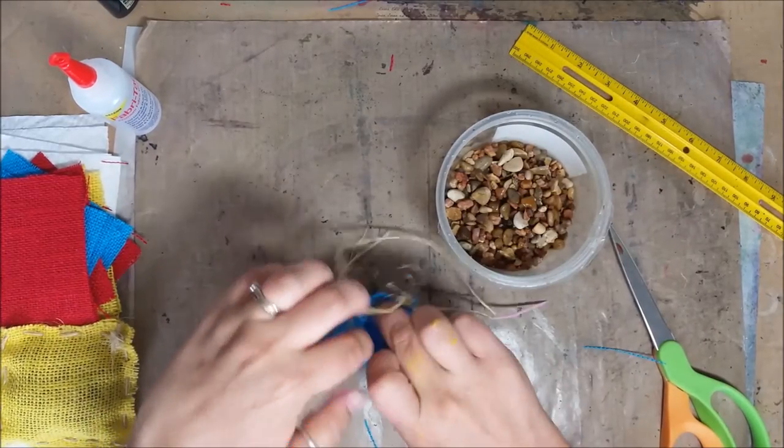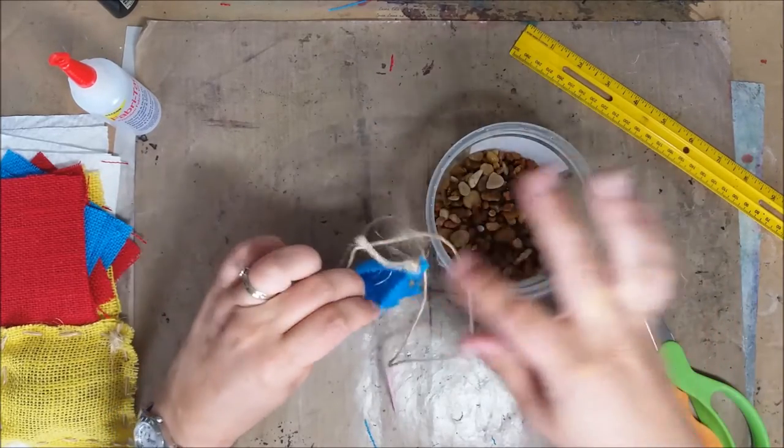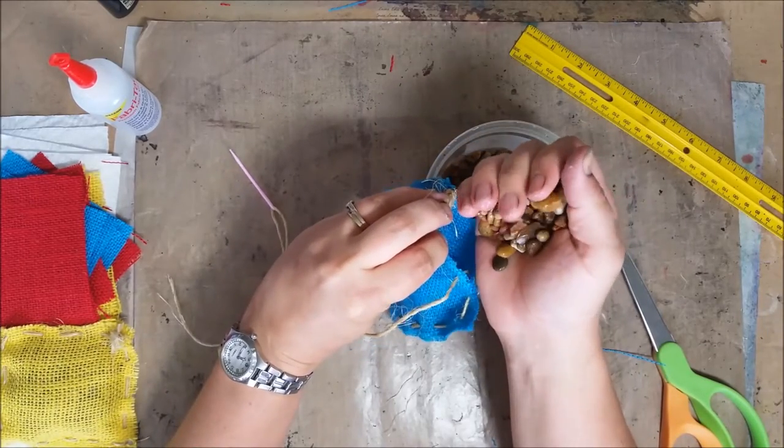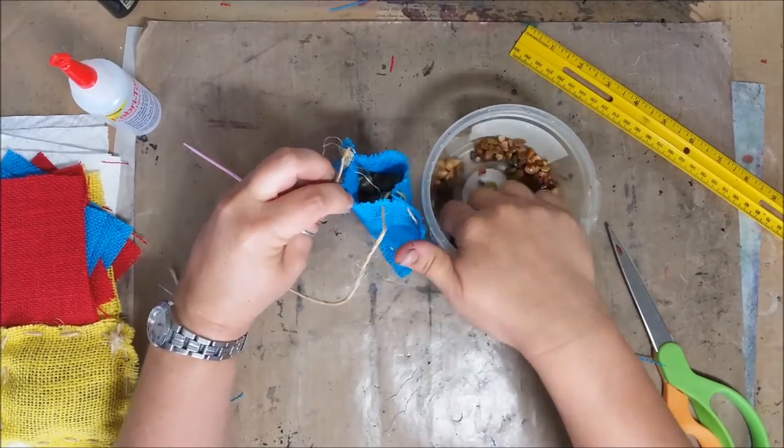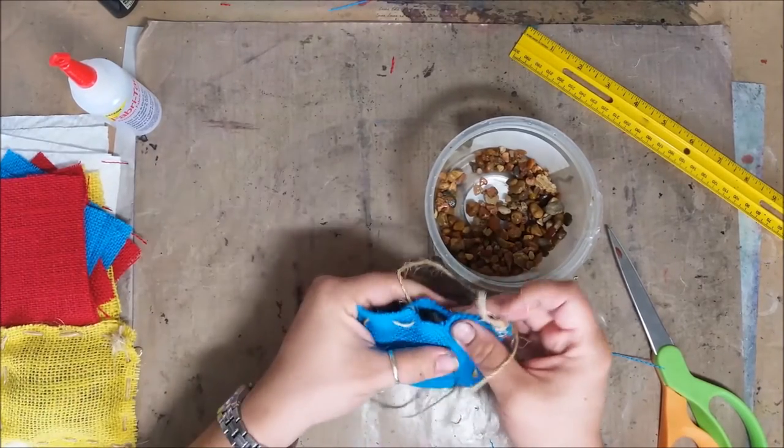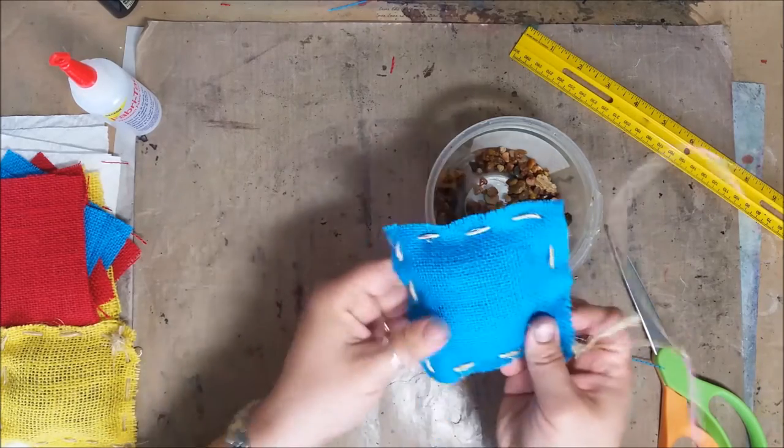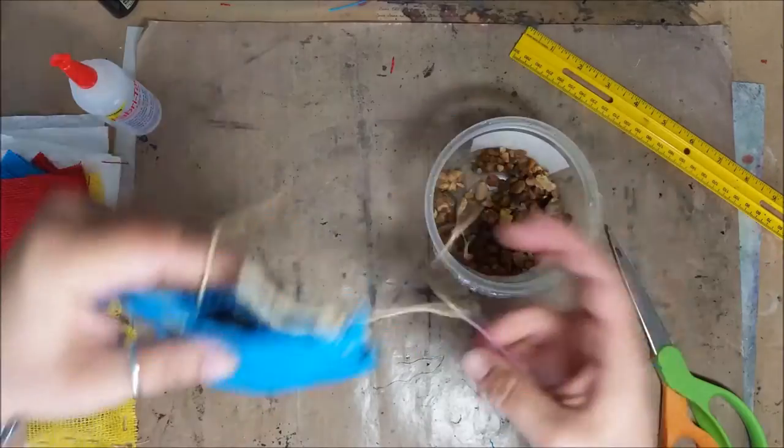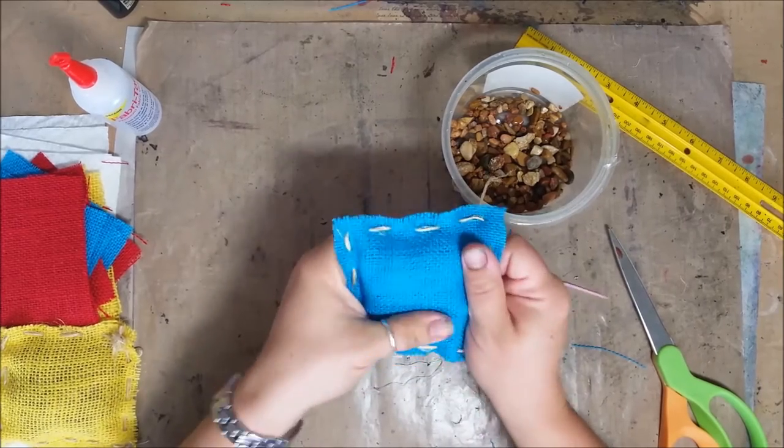I just washed them off real fast just to get any of the dirt off of them. They might still be a tad bit wet. I've been having them in the sun drying. All I'm going to do now is open this up and pour them in. This looks like I can just barely close it, so that's probably about the right amount. I might take a tad bit out. It doesn't take that much. You need to have a little bit of room so they can kind of wiggle around in there and that's fine.